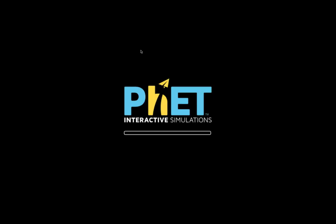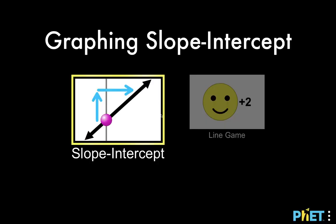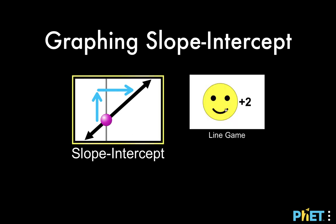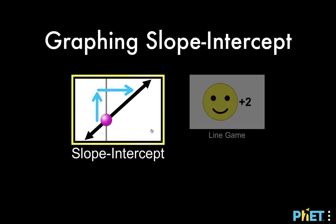Select this icon and you will see two options: one labeled slope intercept, and the other is line game. The first one we are going to use for a short review, and the second option we are going to use for enrichment activities.